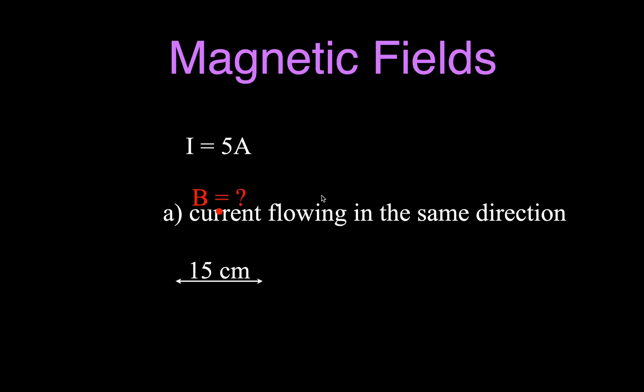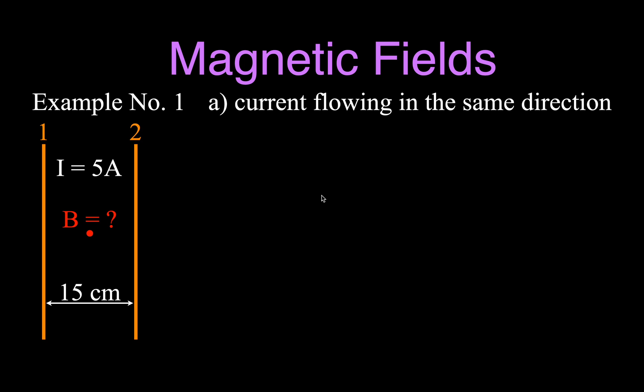We'll do current flowing in the same direction first — we'll say the current is flowing up in both cases, so it's flowing in that direction for both wires at 5 amperes. We are going to first calculate the magnitude of the magnetic field from each of those wires, and then we'll figure out the direction of the magnetic field, and then we'll add them up to find what the field is at that point.